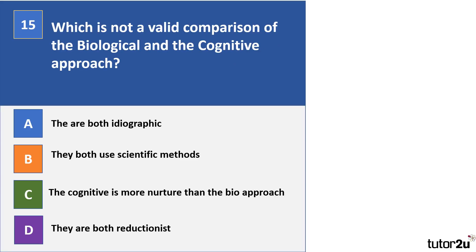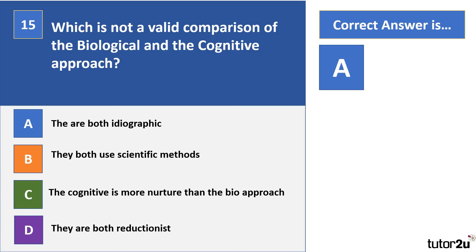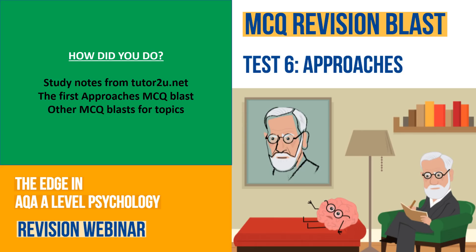Question 15 concerns a valid comparison of the biological and cognitive approaches. Both are very much nomothetic — they rely on experimental methods and aim to establish general laws about human behaviour. I hope you did well on the Approaches MCQ Blast. Do try the other MCQ Blasts on here, and head over to tutor2u.net for study notes on Approaches and other topics.